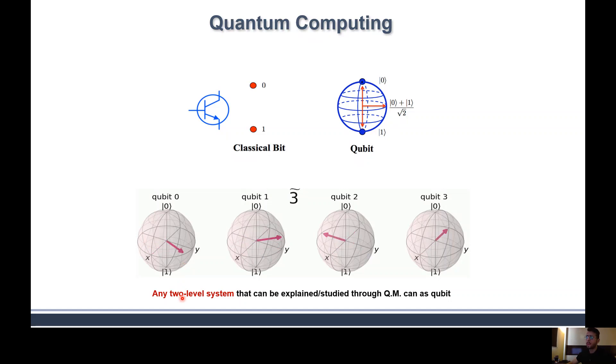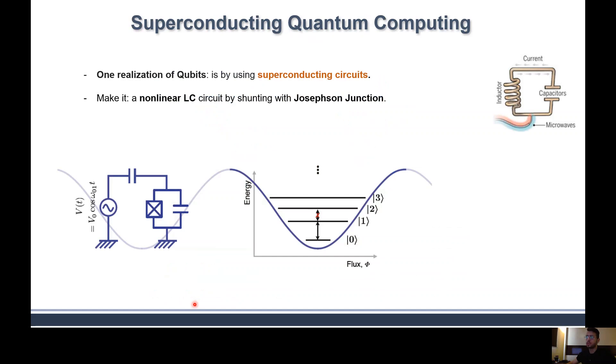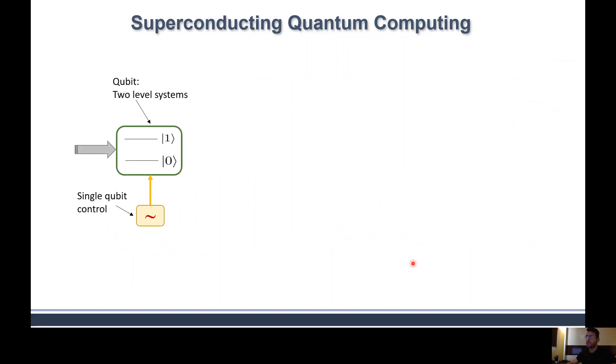Actually, any two-level quantum system can be explained by quantum mechanics and can be a qubit. We can build a qubit using superconducting circuits, in which an LC resonator circuit, transformed by an element called Josephson Junction, makes the circuit a quantum system. This circuit has an energy spectrum in which the lowest two energy states of that system can be a new computational basis, which are used for quantum computing.